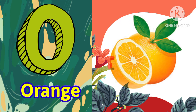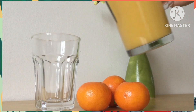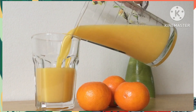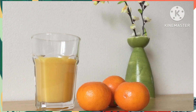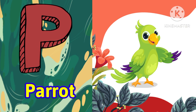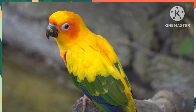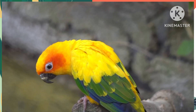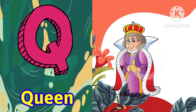N is for Nest. O is for Orange. P is for Parrot.